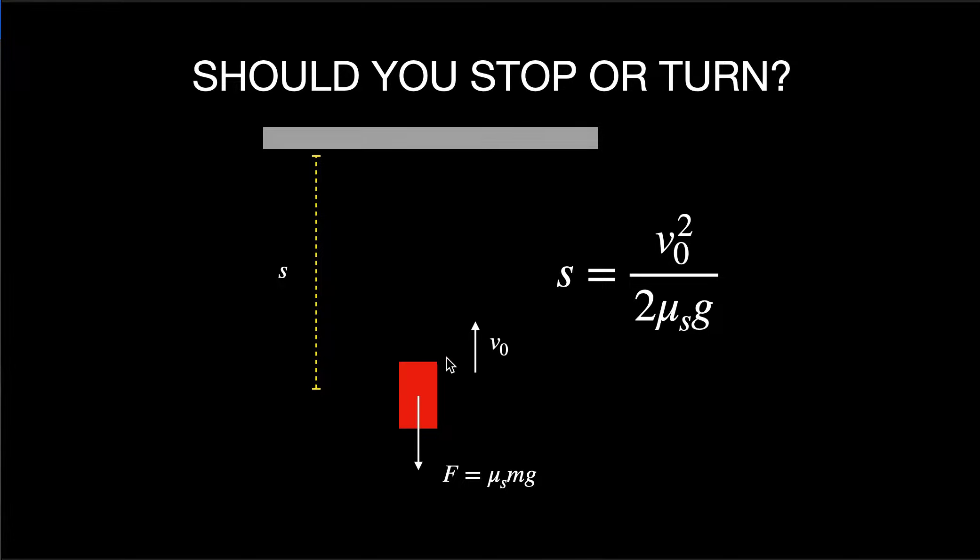So if you are stopping, here's a car moving towards this wall, stopping, then you have the frictional force pushing backwards, and you can calculate the distance that it takes to stop. You get s = v₀²/(2μg), where it depends on the initial velocity divided by 2 times the coefficient of friction times g. Done.